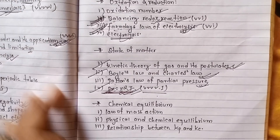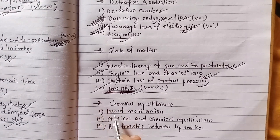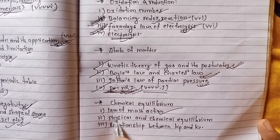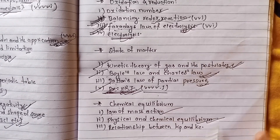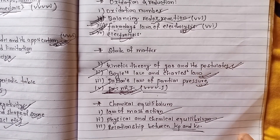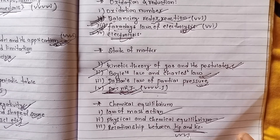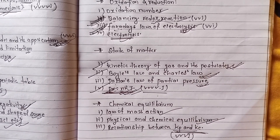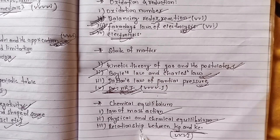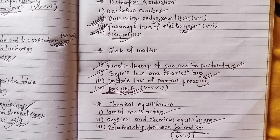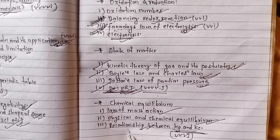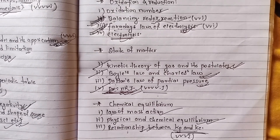This is the last chapter — physical chemistry. The law of mass action, physical and chemical equilibrium, and the relationship between KP and KC are very important. Make sure to practice this chapter.